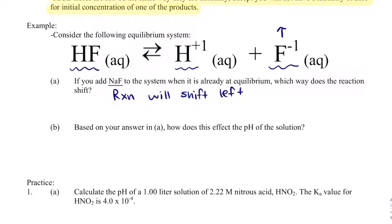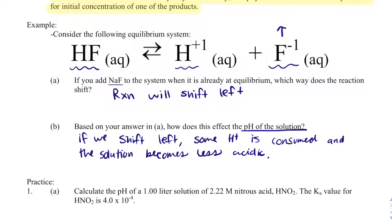In part B, it asks how does this affect the pH? Well, if we shift left, some of this H+ is consumed. And because it is consumed, what that means is there's less hydrogen ions, and that makes the solution less acidic. And I always have to slow down when I answer a question on pH, because if the solution becomes less acidic, the pH actually increases. And that's because it's a negative log scale.